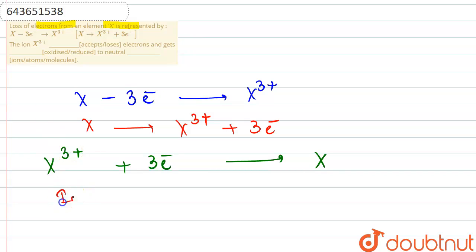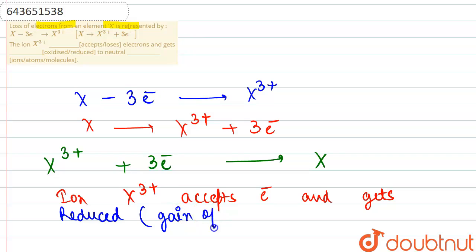We can say that the ion X3+ accepts electrons and gets reduced. Why reduced? Because reduction is gain of electrons. So we know that if any species is losing the electron, loss of electron is what we call oxidation. The species on losing gets oxidized.